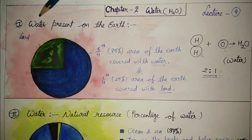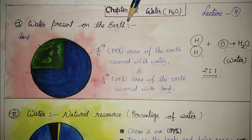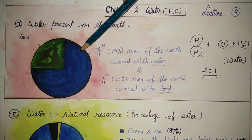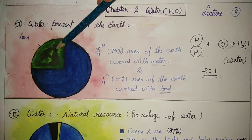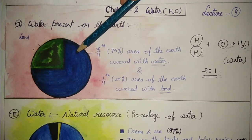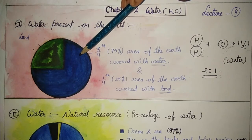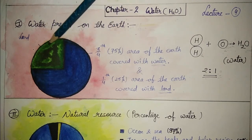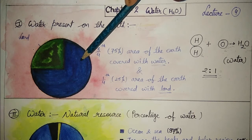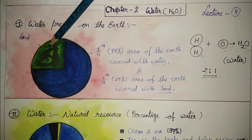Now, water present on the Earth. Look here students — in the diagram, this blue color represents water, and this green and brown color represents land. It means three-fourths of the Earth's area is covered with water and one-fourth is covered with land — that is 75 percent water and 25 percent land.